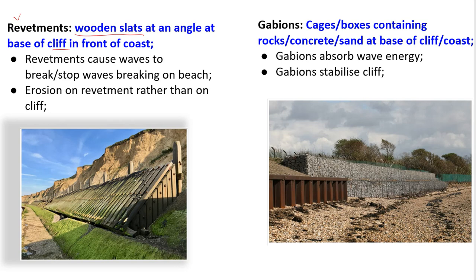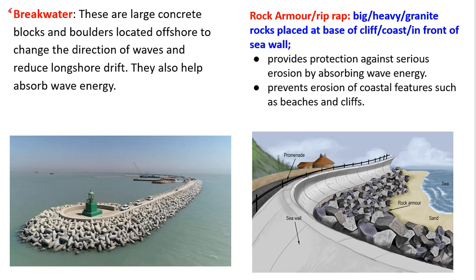Gabions are cages or boxes containing rocks, concrete, or sand placed at the base of a cliff. What gabions do is absorb wave energy — once the wave tries to hit the base of a cliff, the wave energy is absorbed by the rocks inside the cage. As a result, they help to stabilize the cliff and prevent it from further erosion.